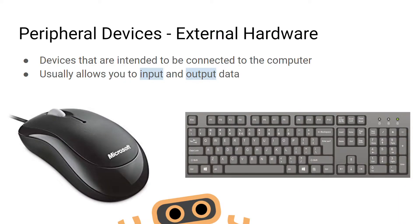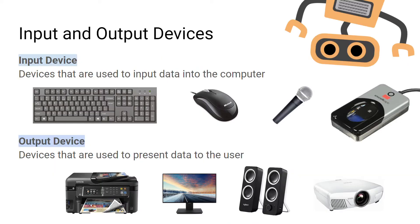Peripheral devices are external pieces of hardware, usually referred to as input or output devices. Input devices are bits of hardware used to put data into the computer — an example would be a keyboard or a mouse. An output device is hardware used to present data to a user, such as a printer or a speaker.